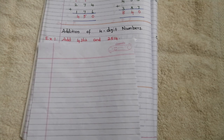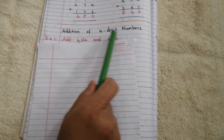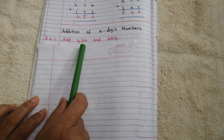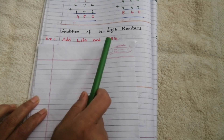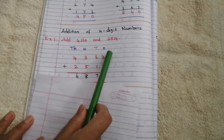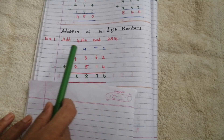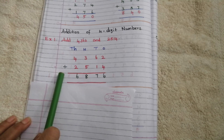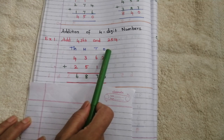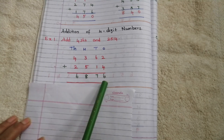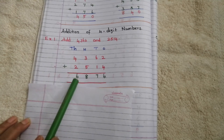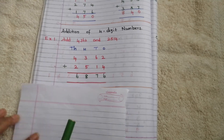Hi, my dear students. Today we are going to discuss addition of four-digit numbers. Example one: add 4,362 and 2,514. To add these numbers, first we write the number vertically, then write ones, tens, hundreds, thousands. Put the plus symbol and start addition from the ones place: 4 plus 2 is 6, 6 plus 1 is 7, 5 plus 3 is 8, 4 plus 2 is 6.